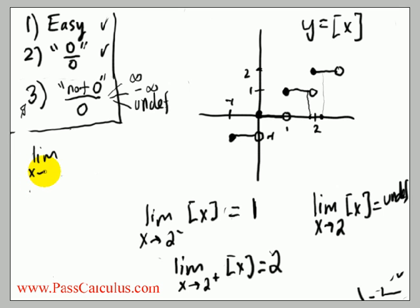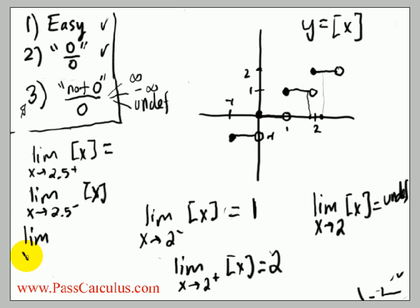The limit as x goes to 2.5 of the greatest integer of x. From the right, and from the left, and the two-sided as well. What do you think the answers for those would be? Let me just erase this, get some room.